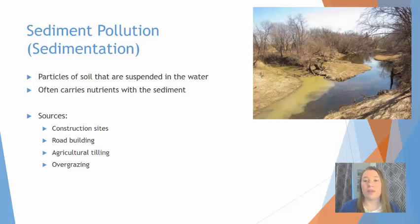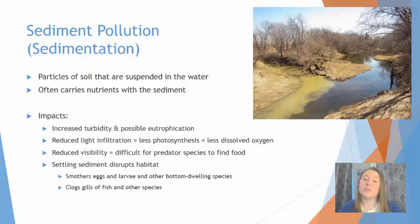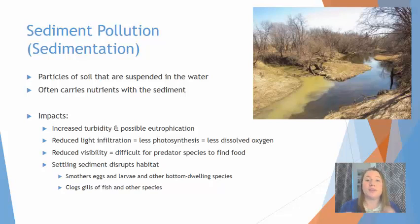Another threat to aquatic environments is sediment pollution, also called sedimentation. These are particles of soil suspended in the water, and they're often associated with carrying nutrients along with them. They are typically associated with human disturbance of the land that leaves soil exposed, such as construction sites, road building, agricultural tilling, and overgrazing of the land. As a result, this increases the turbidity, meaning sunlight is not able to penetrate through the water column. This can also potentially lead to eutrophication from extra nutrients carried along with the soil.